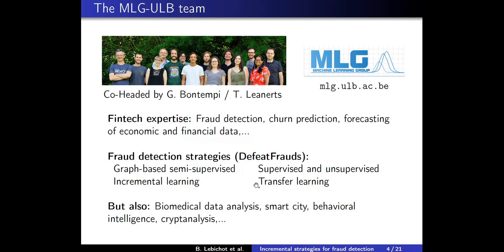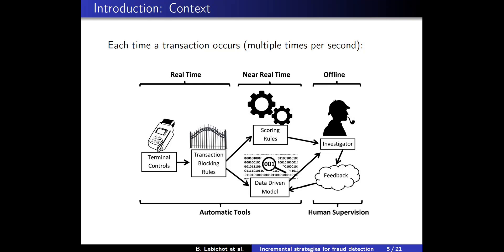Let's start with a bit of context. Each time a credit card transaction occurs, it has to go through several lines of defense to catch frauds — that's basically because frauds cost billions of dollars each year to the industry. Some defense lines can be very fast, up to milliseconds, and others are really long, up to weeks. For example, a transaction can be blocked at terminal level because the card is no longer active, or because of insufficient funds. Scoring rules written by experts are coded in the system — for example, transactions in five minutes in a certain shop can be denied.